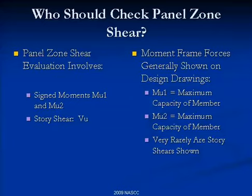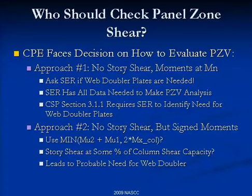The design drawing routinely just shows that the beam-to-column moment connection should be the capacity of the member — typically using CJP flange welds — and it's extremely rare to see a story shear on the design drawing. Approach one: where you have no story shear and you're taking moments at Mn capacity, you could ask the SER if web doubler plates are needed — this is a good thing to do. You'll frequently get back 'we've checked it, don't worry about it.' Approach two: if they gave you signed moments, you can use the minimum of the algebraic sum of Mu2 plus Mu1, or twice the column capacity, for figuring panel zone shear — though you're still stuck without a story shear, so your calculation will be conservative.